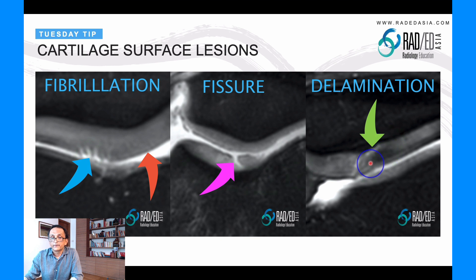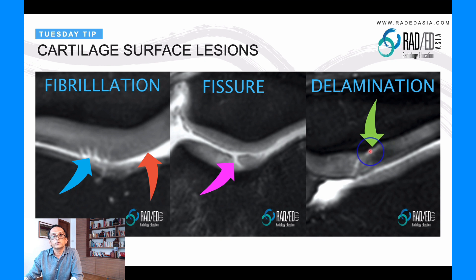What can happen is that the fissure can get down to the cortex, and then it can start to undermine the cartilage. When it undermines cartilage like this, this is called delamination. Delamination is a separation of cartilage from the cortex, and this bit of cartilage is now weakened.